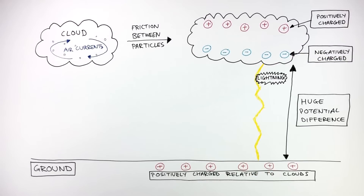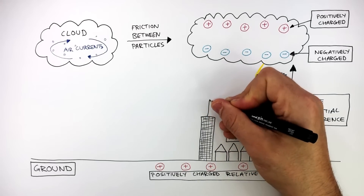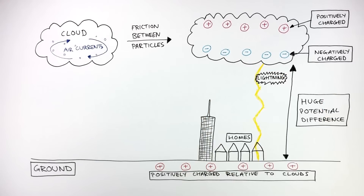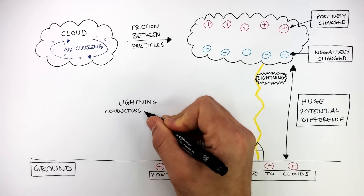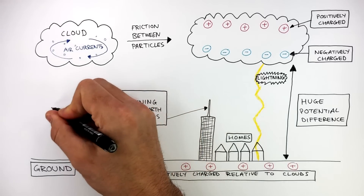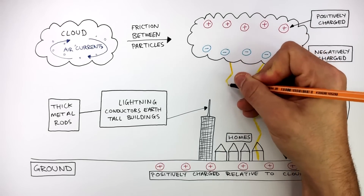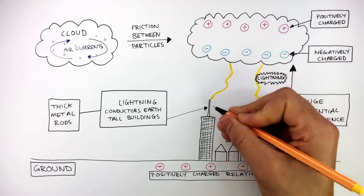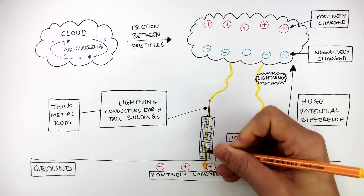Lightning is dangerous and has the potential to damage homes. To prevent this damage, tall buildings have lightning conductors at the top of the building. These are thick metal rods — they're called lightning conductors — and they earth tall buildings. Lightning rods allow the lightning to discharge safely through them and flow through a metal rod straight through the building and into the ground.